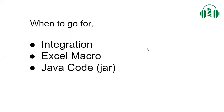Hello everyone, welcome back. When to go for integration, when to go for Excel macro, and when to go for Java code? When you are in an integration field and receive a requirement from a customer, we need to decide whether to build an integration using an integration tool, write a macro for a one-time job, or write Java code and deploy it. We need to decide based on the requirement.